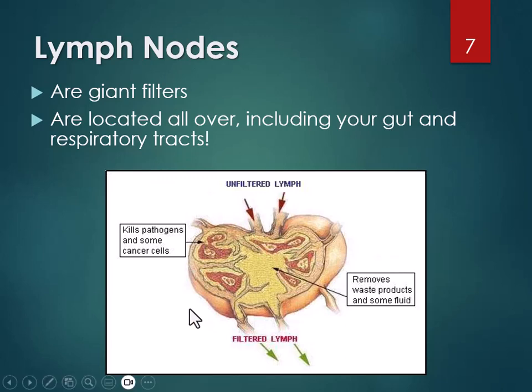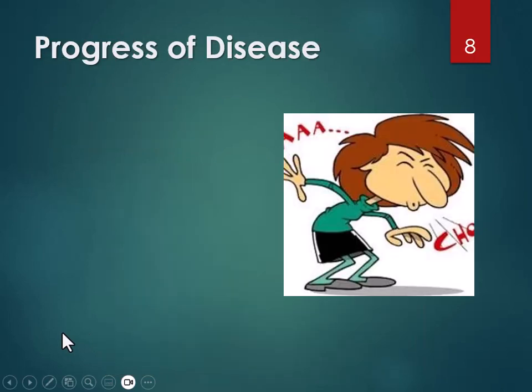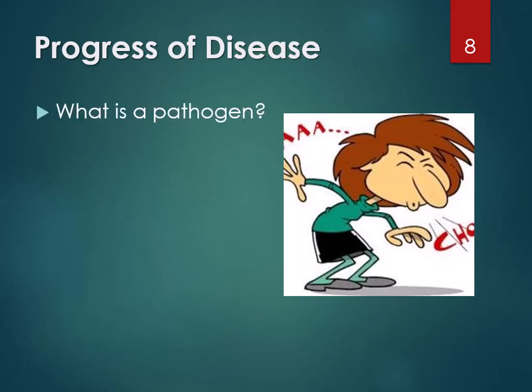That's pretty much the function of the lymph system, except for the immune system, which is most of what we'll talk about in this unit. A couple of words you need to know before we get into the immune system: first is pathogen. A pathogen is anything that causes disease — almost always bacteria, viruses, fungus, or parasites. But technically a chemical that causes disease, like benzene whose exposure can lead to leukemia, can also be considered a pathogen.